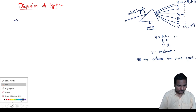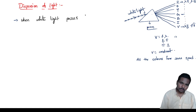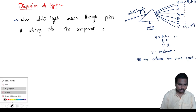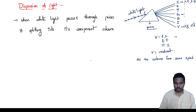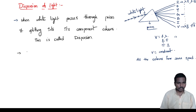Note down — dispersion of light: when white light passes through a prism, it is split into its component colors. This is called dispersion. Here we can get seven component colors.